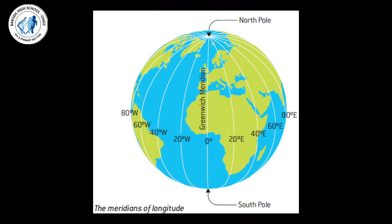These imaginary lines are vertical and they run in the north-south direction — those are known as longitudes. The meridians of longitudes are the vertical imaginary lines running from the north pole to the south pole. They join all the places lying on the same longitude and are measured in degrees, minutes and seconds.